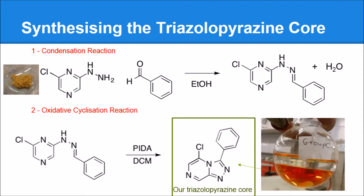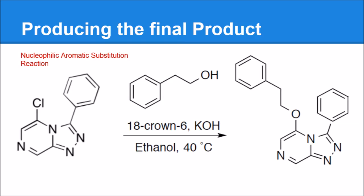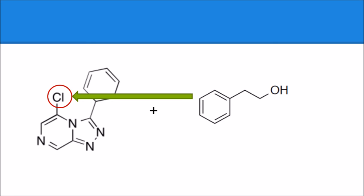In this next section we're going to be looking at how we synthesized our final compound. A major process in this was conducting a nucleophilic aromatic substitution. Our aim is to remove this chlorine and replace it with this phenylethanol group, because this forms our final compound which is going to be our anti-malarial compound.